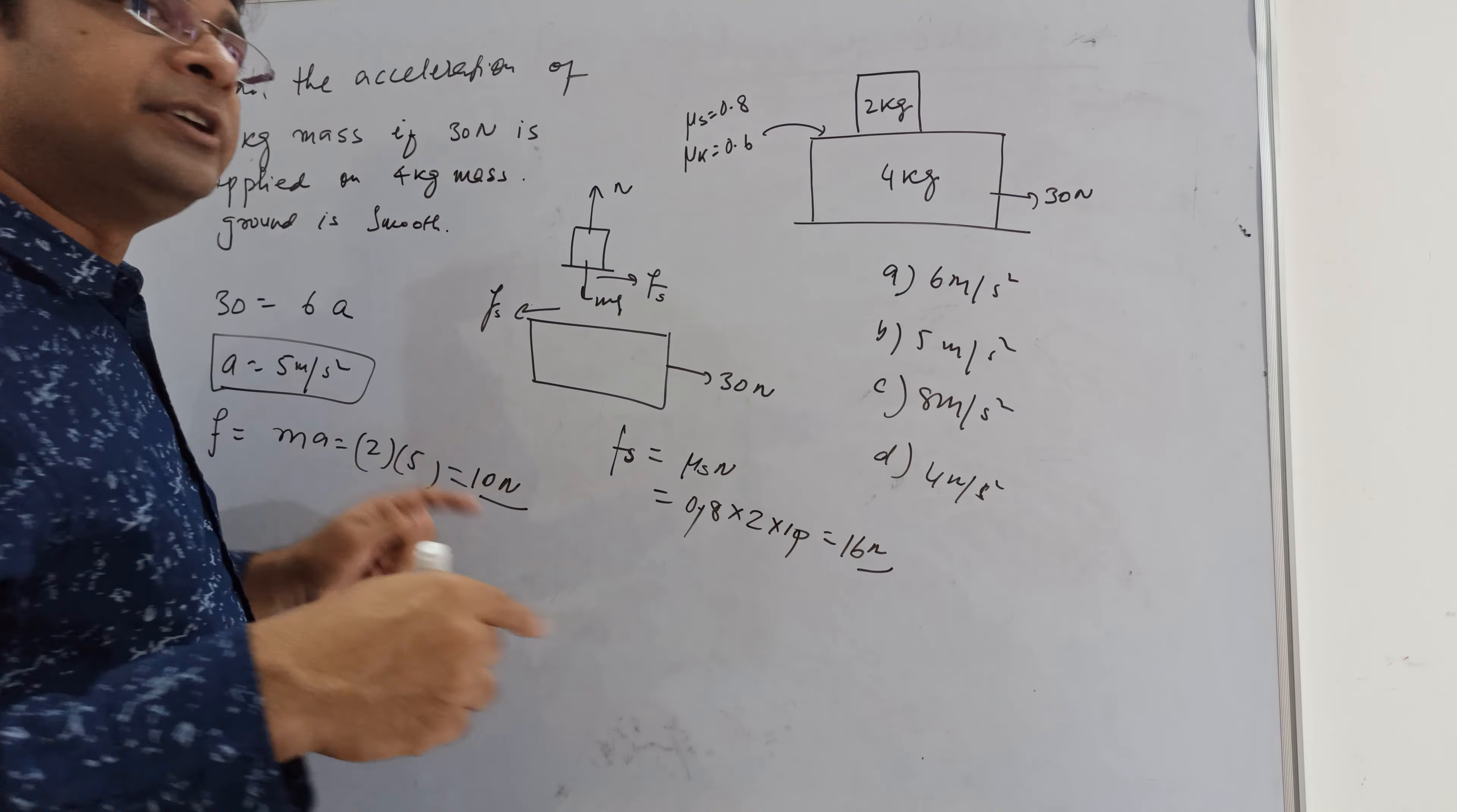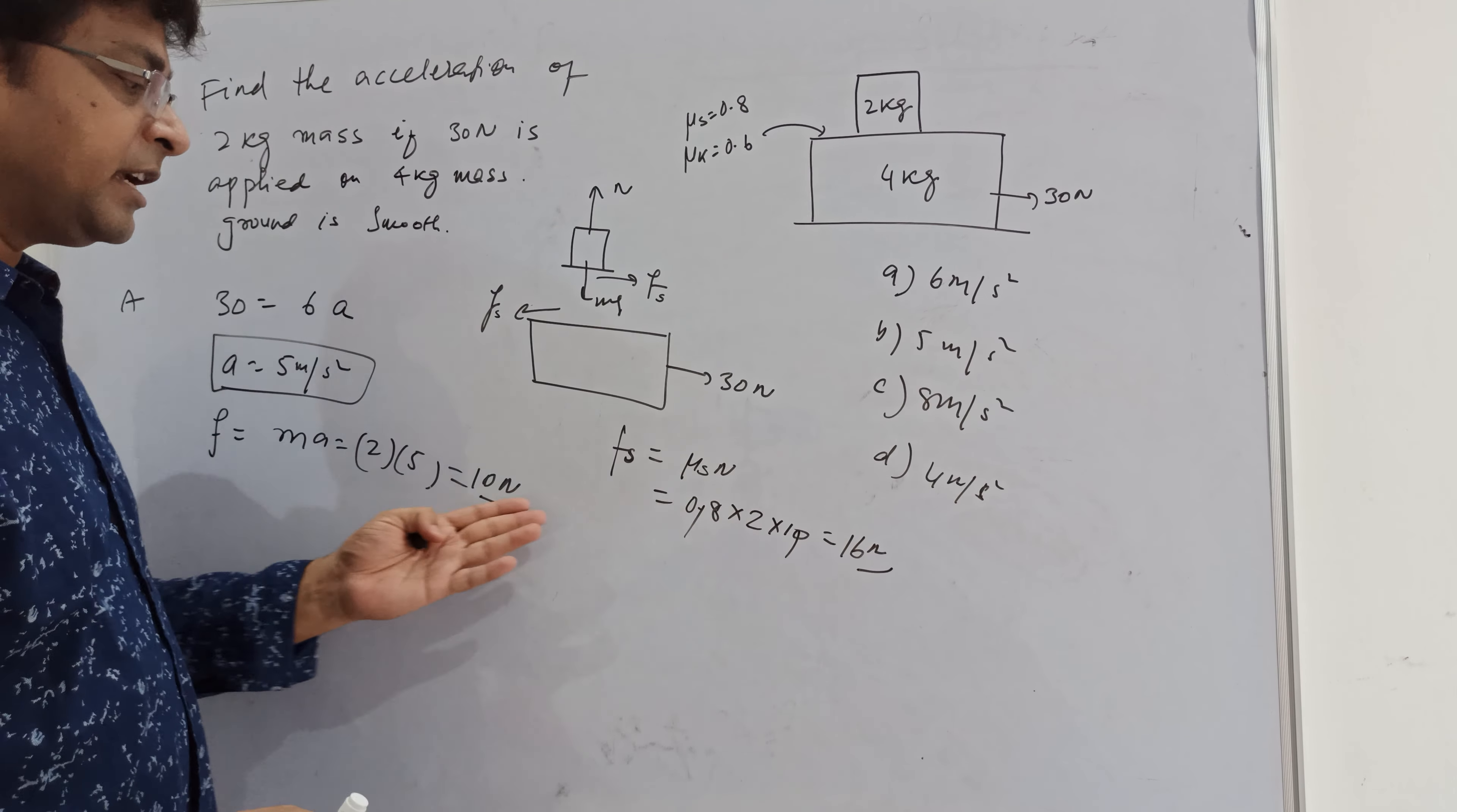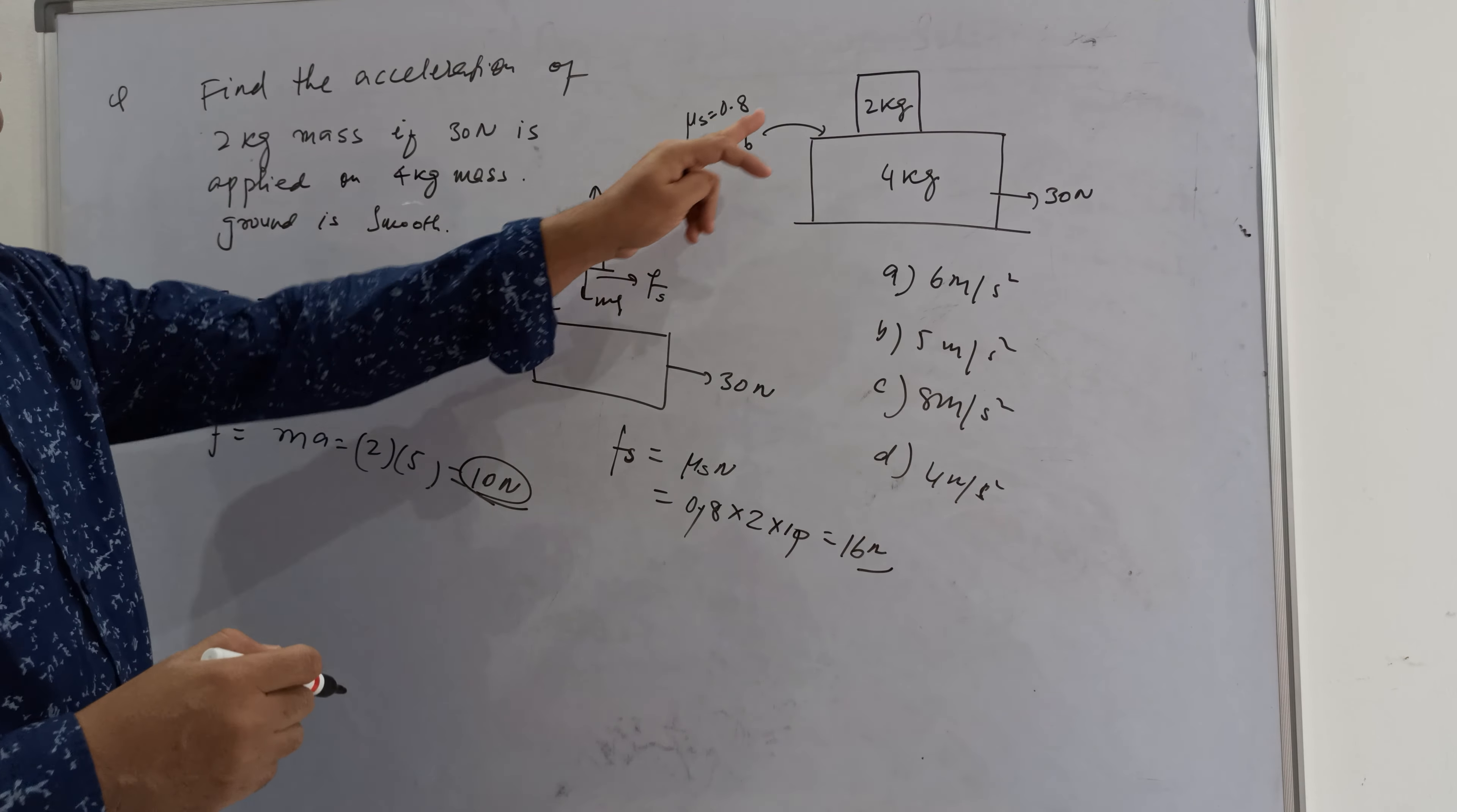So maximum friction possible is 16 newton. Maximum static friction adjustable force varies from 0 to maximum. Since we need 10 newton, which is in the range, friction force must be 10 newton here. So acceleration must be 5 meter per second square for the upper block.